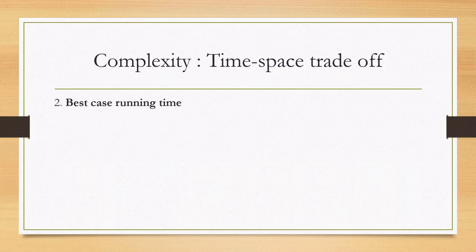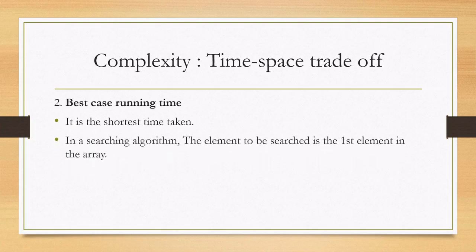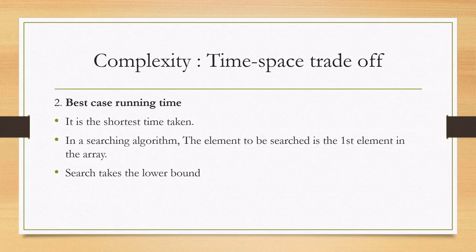The second is best case running time — the shortest time taken for searching. In this case, the element to be searched will be the first element in the array. If the element we are searching for is the first element, we only have to compare once. The element is found at the first position, so searching stops there. The time taken will be the shortest, and the search takes the lower bound.